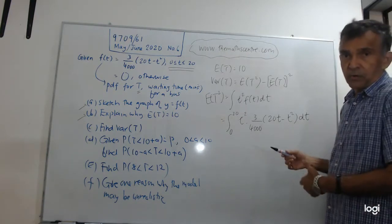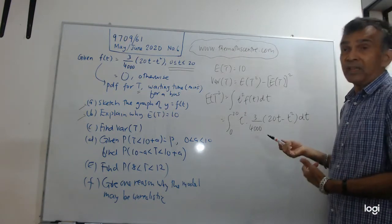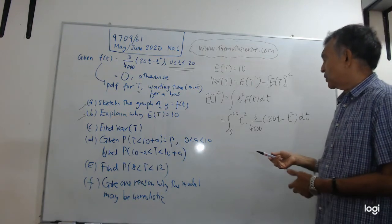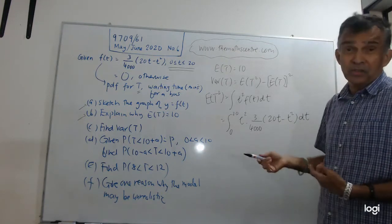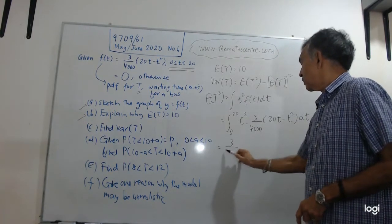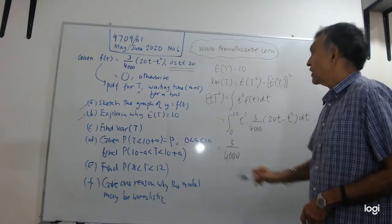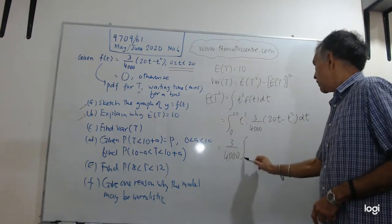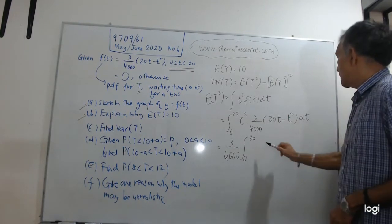So now it has become a calculus problem. Just do the integration carefully. We are in pretty good shape here because our lower limit is zero. So we have three over four thousand going from zero to 20. I have got 20 t cubed minus t to the power of four dt.